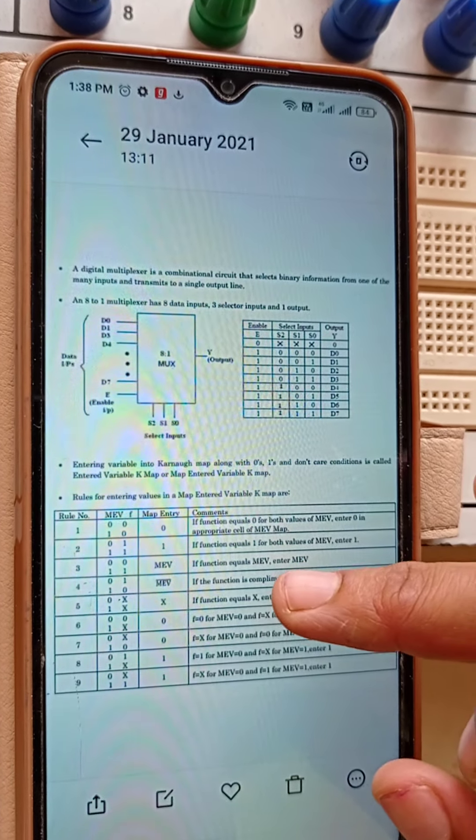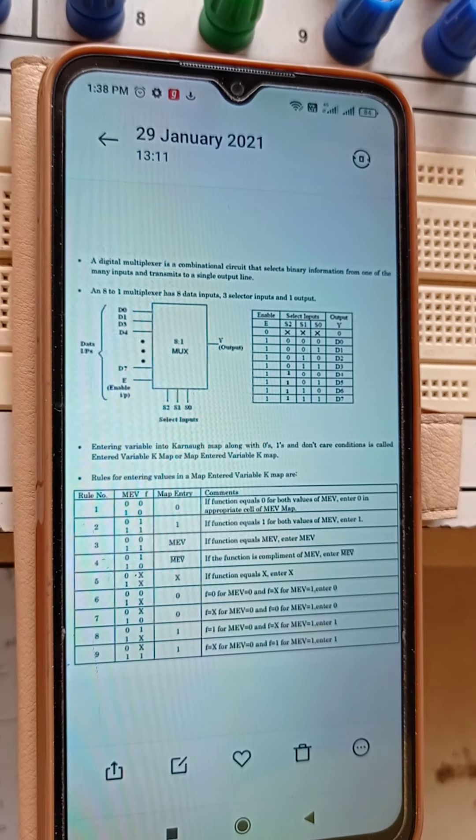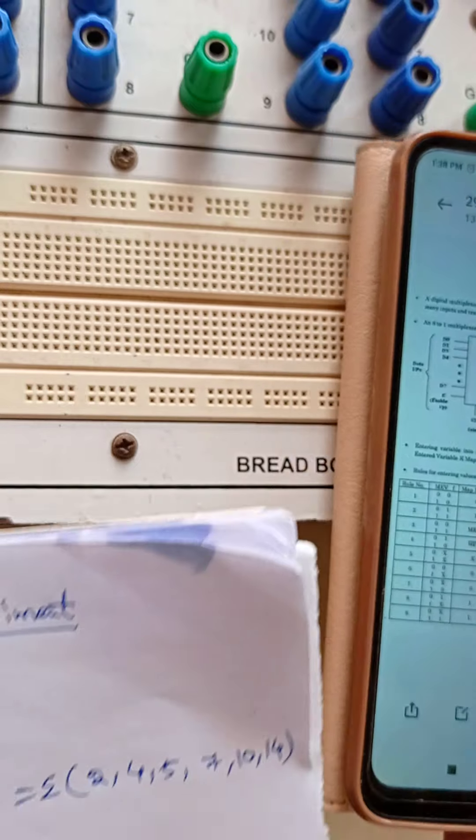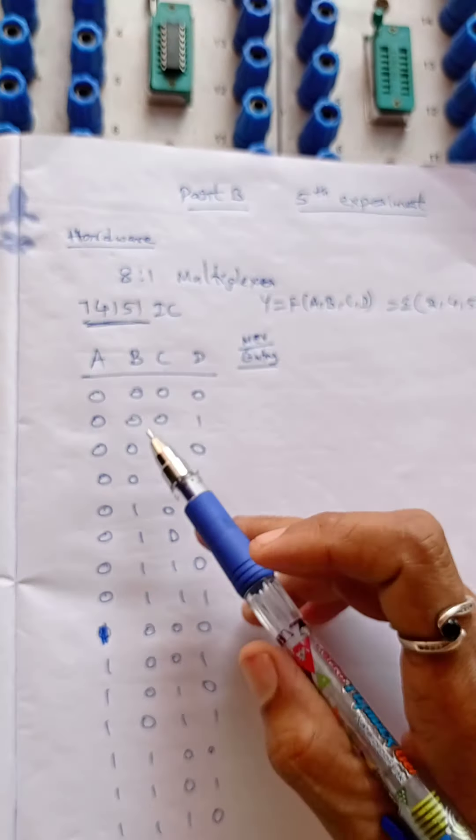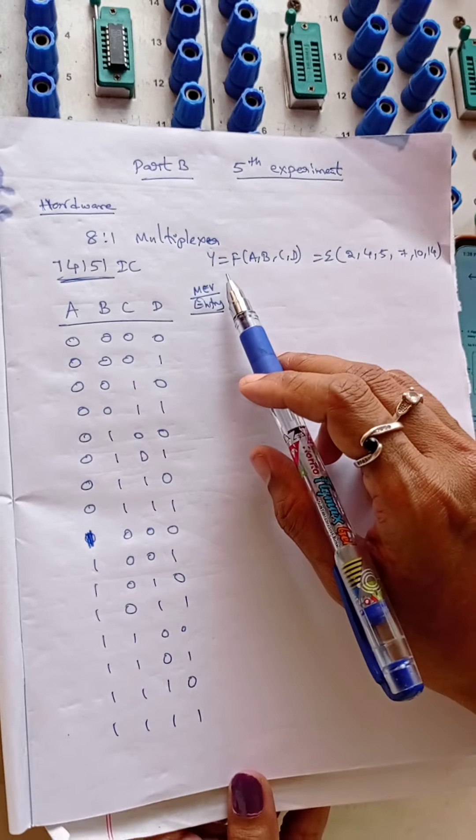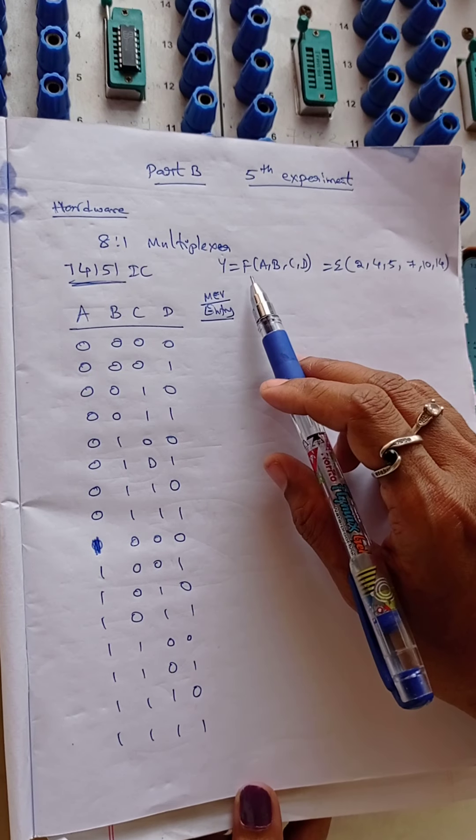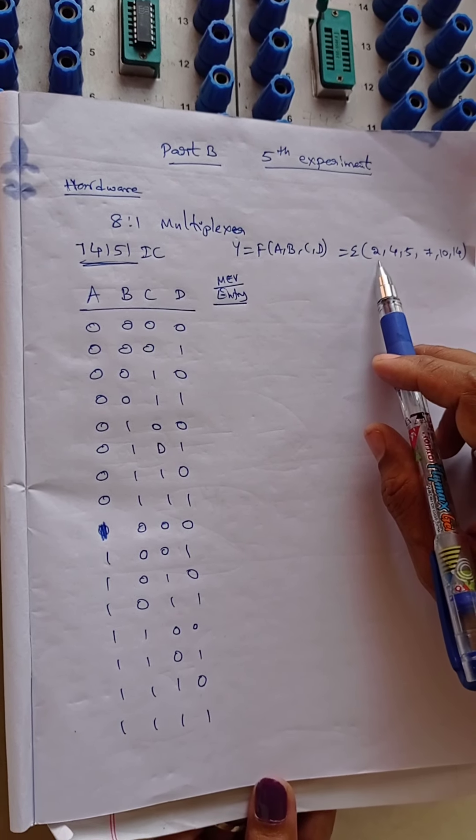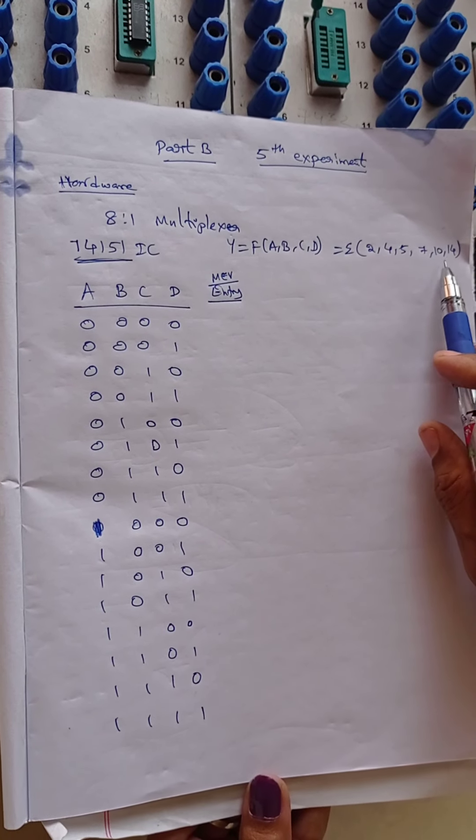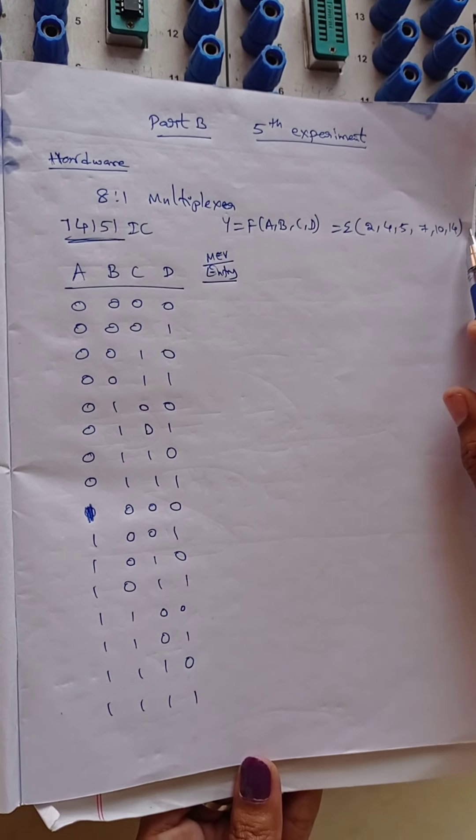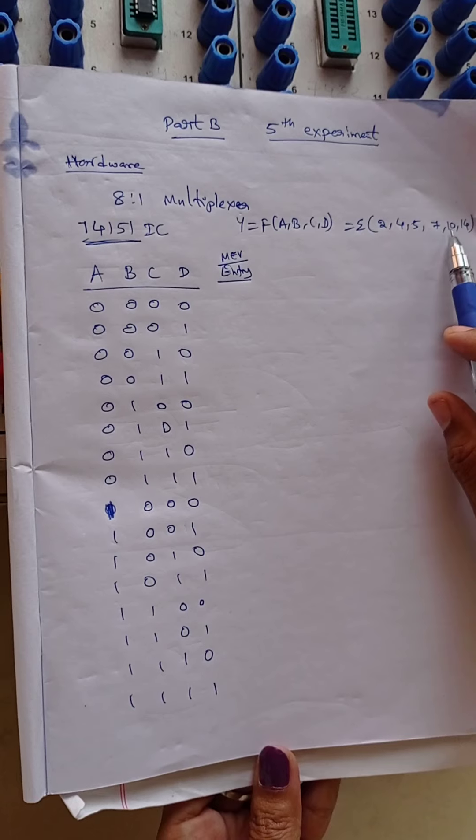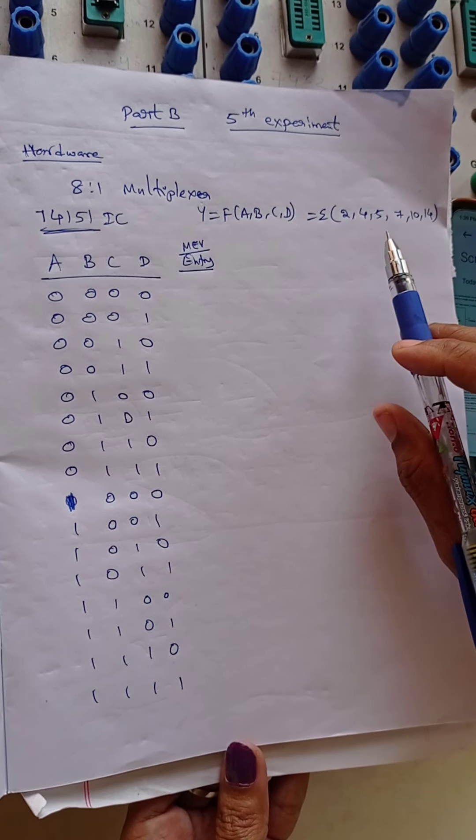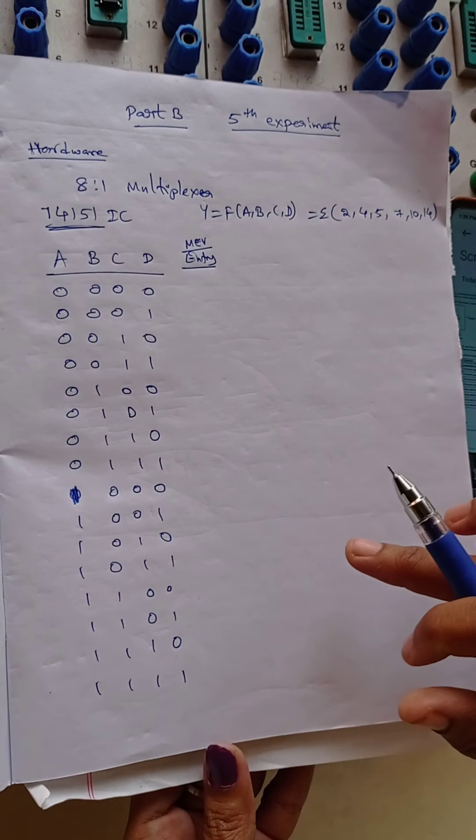Now first we need to design, for 4 inputs ABCD the expression is given Y is equal to F of ABCD summation of SOP expression 2, 4, 5, 7, 10, 14. That means for these data inputs we should get Y output high and for all remaining it should be 0.